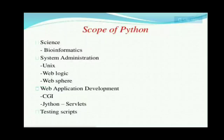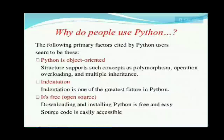The scope of Python includes: science such as bioinformatics, system administration with Unix, web logic, WebSphere, and web application development using CGI and Jython (which is like a servlet — code that comes to the client machine, performs activity, and goes back to the server). Python is also used for testing scripts, meaning you can test software written in other languages using Python.